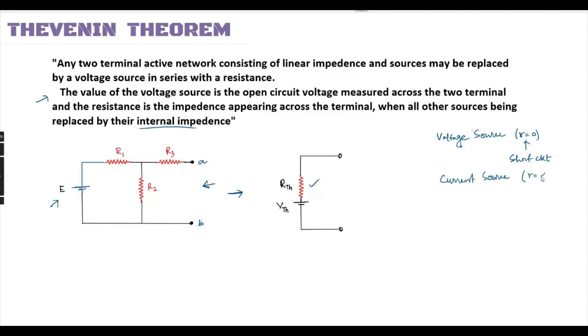For an ideal voltage source, R equals infinity, so for ideal case we consider R equals infinity, making it an open circuit. Now to get the Thevenin resistance across terminal A and B with internal resistance, we put a load on the network.